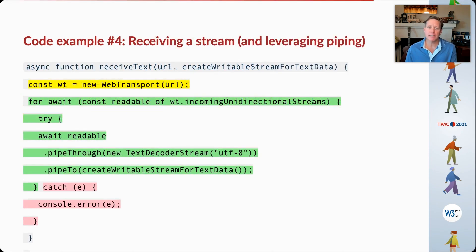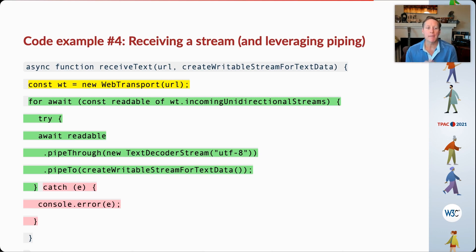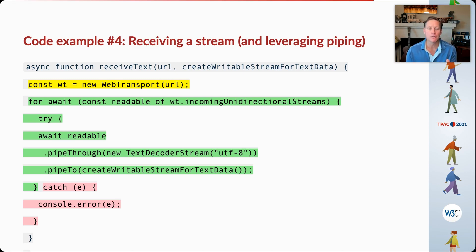The last code example shows receiving that stream on the other end, perhaps leveraging piping, which is quite exciting. In this hypothetical example, we create our Web Transport connection, await an incoming stream, and process these incoming streams one by one. I await the readable interface on the unidirectional stream, and then I'm able to pipe the incoming data — in this case through a text decoder stream — so an array of bytes is transferred into an array of characters, which I then pipe into a destination that can handle that stream, such as a closed caption display. All in all, a readily accessible API that people will be quite excited to use.